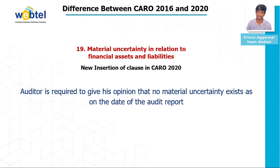Clause nineteen is Material Uncertainty in Relation to Financial Assets and Liabilities — also a new inserted clause in CARO 2020. The auditor is required to give his opinion that no material uncertainty exists as on the date of the audit.